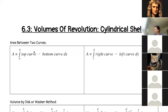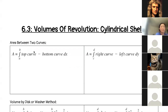All right, so here we are, folks. We are in the second to last week of classes, and we are finally at the very last section that we will be covering in this class. So 6.3 will round out our Calculus 1 experience, and 6.3 talks about more volumes of revolution — the situation where we take the area and we revolve it around an axis and we get a volume.